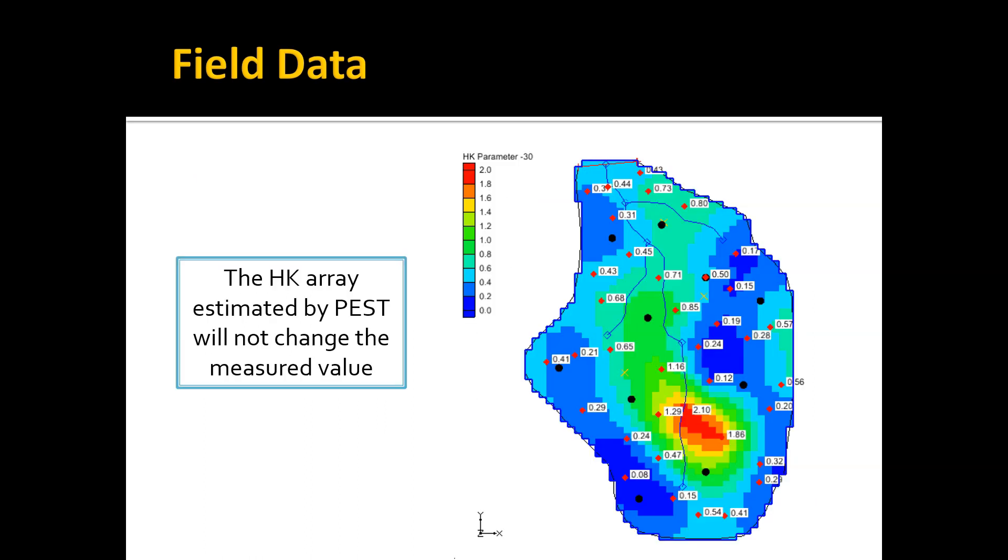When you interpolate your hydraulic conductivity array using the pilot point method, whatever value you assign as a starting value for that point remains the permanent value and is fixed and does not change during the parameter estimation process. This is not terribly common—I haven't encountered that myself—but it is something that you can do with the pilot point method.